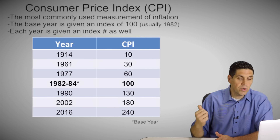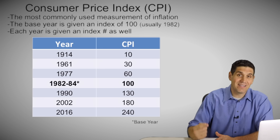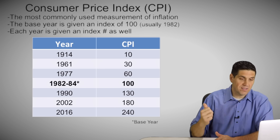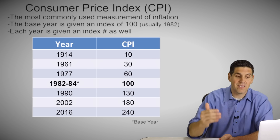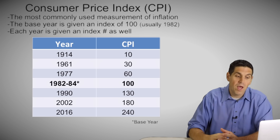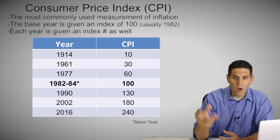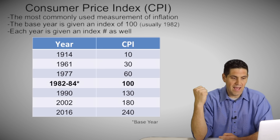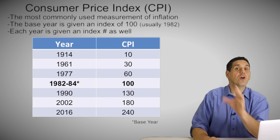The 2002 CPI is 180, so prices increased 80% since the base year. For 2016, the CPI is 240, so prices increased 140% since the base year. If something cost $100 back in 1982, it would now be $240 in 2016 — prices increased 140%.